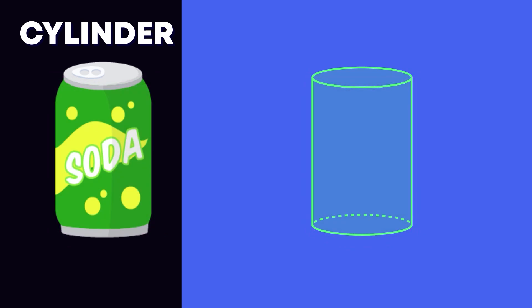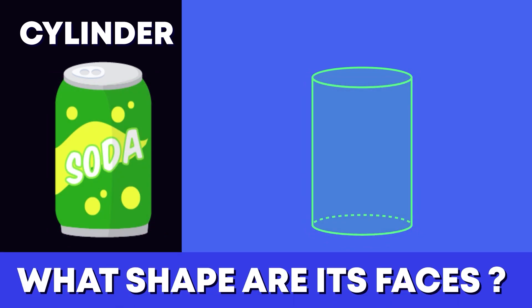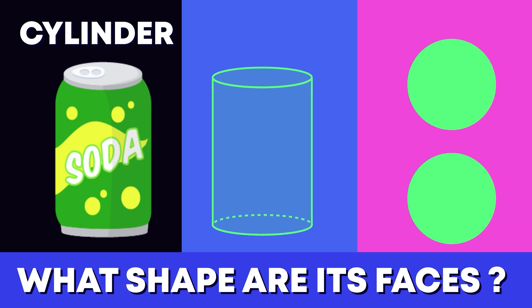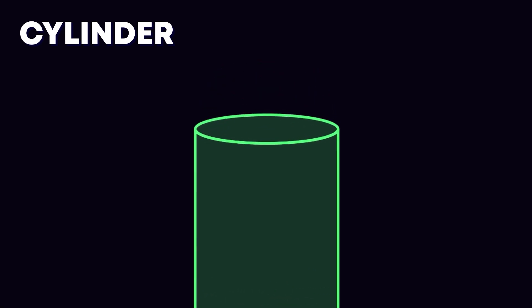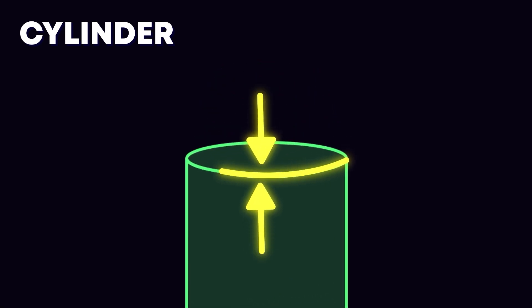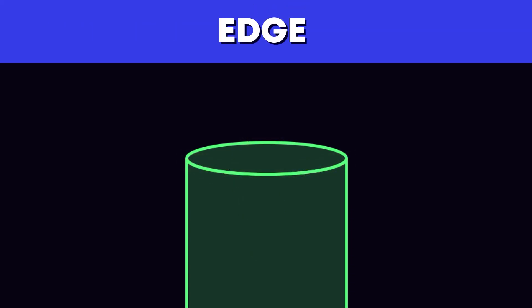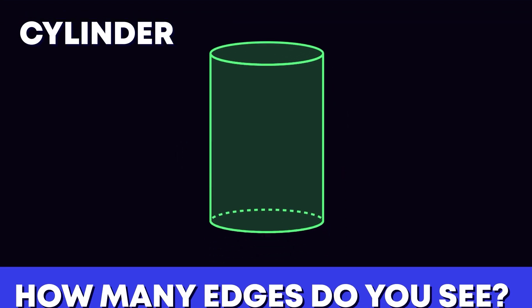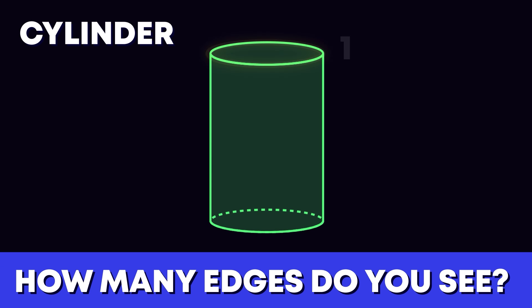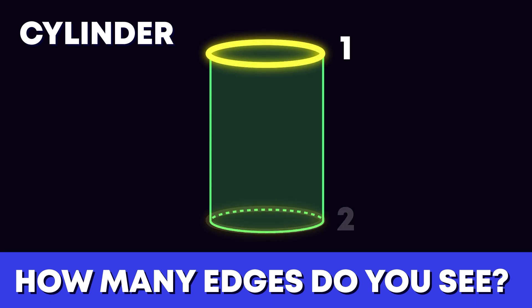What shape are its flat faces? Circles — that's right! Where a curved surface meets a face is also called an edge. How many edges does a cylinder have? There are one, two edges.